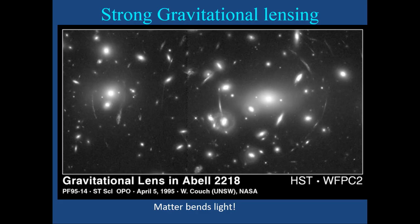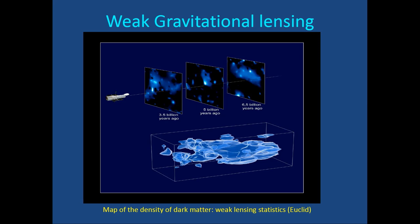Gravitational lensing produces arcs — multiple images of a background galaxy lensed by a foreground cluster — confirming that matter bends light, as Einstein predicted and Eddington confirmed in 1917. Weak gravitational lensing is now used routinely to measure dark matter density: statistical distortions of galaxy images allow mapping of dark matter distributions across the sky.